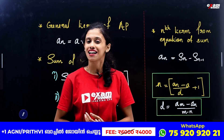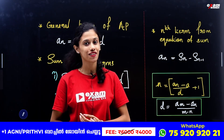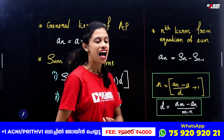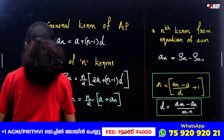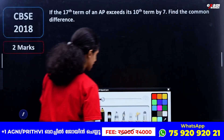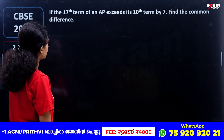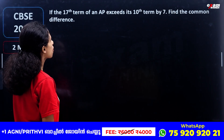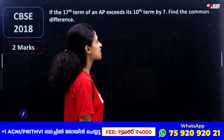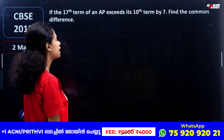Let's start with Arithmetic Progression. I will give you 4-mark questions. We will solve these 4 types of questions, then we will solve these 2-mark questions. Is the 17th term of an AP exceeds its 10th term by 7? Find the common difference.